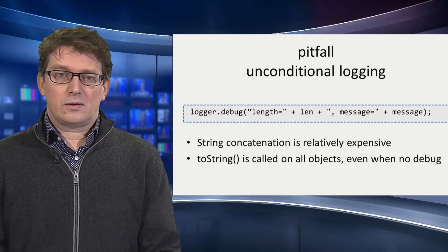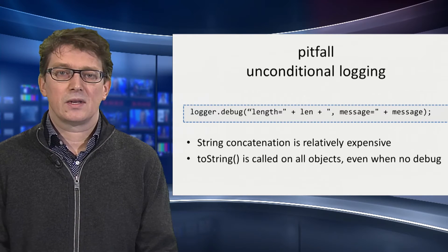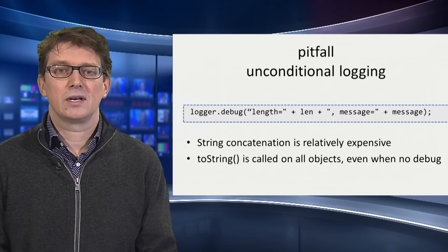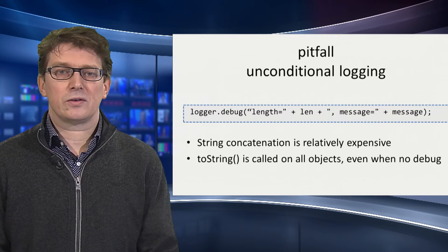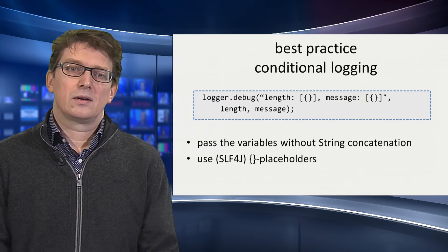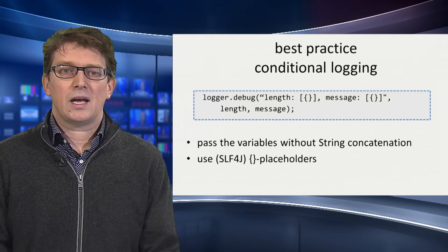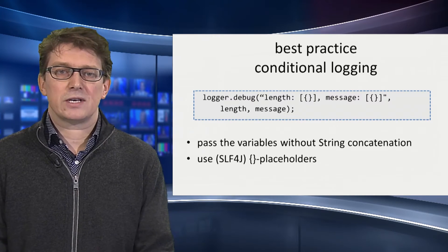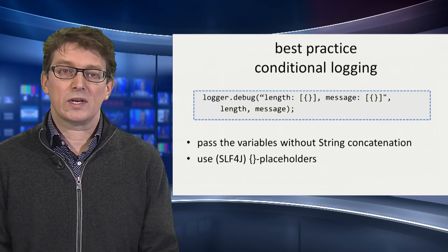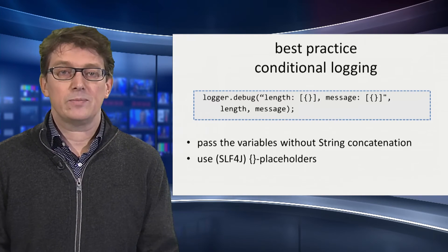If you're doing a log line in debug or any log line, avoid string concatenation. Concatenation is relatively expensive. If the message is a long string, before the debug call is made, the string is expanded into a very large string. The best practice is to use no string concatenation and instead use the placeholders in slf4j. The message gets passed as an object to the debug log line, and only when debug is enabled is toString() called. This saves a lot of memory and CPU.